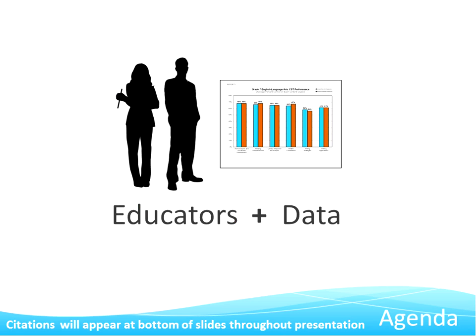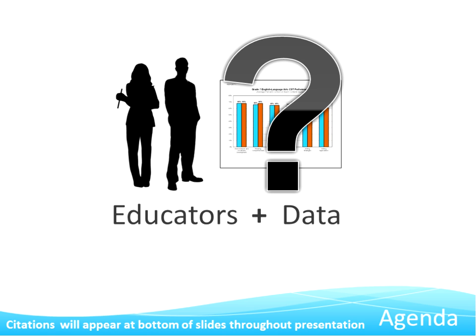We know that educators armed with data to inform decisions is a powerful tool to transform learning. However, data can transform learning in a bad way if educators misunderstand the data and thus use it to make poor decisions. This presentation will examine a largely overlooked culprit that interferes with data's ability to help educators make a difference — and that culprit is the manner in which data is communicated to educators with educational technology.